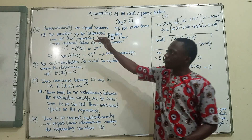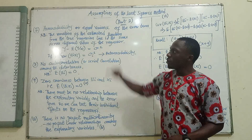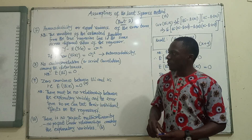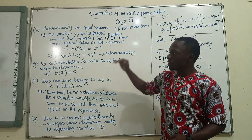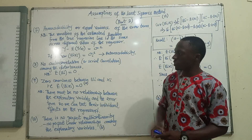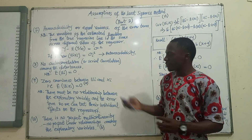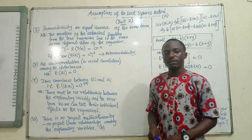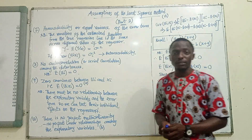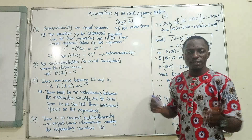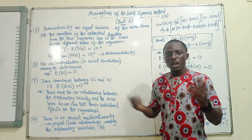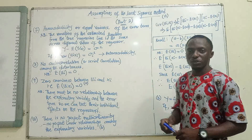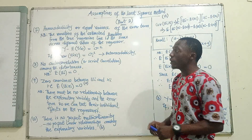The first one here, number seven, is about homoscedasticity. The second one, number eight, is about autocorrelation. The third one is about zero covariance. And the last one here is about multicollinearity. So what do these terms mean and how do they affect our assumptions of the OLS?